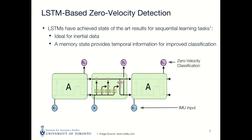We decided to use an LSTM since they have recently achieved state-of-the-art results for sequential learning tasks. Their main advantage is their propagation of a memory state through time, which allows previous inputs to impact the output at the current time step. This type of network can outperform standard neural networks, which only use data from a single input in their classification. Since inertial data is sequential in nature, LSTMs are ideal for zero velocity classification, as zero velocity events at adjacent time steps are highly correlated.